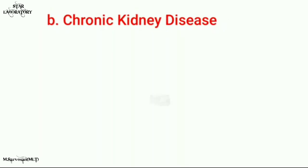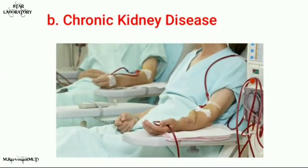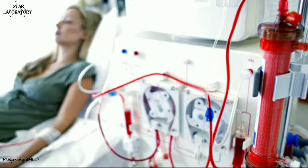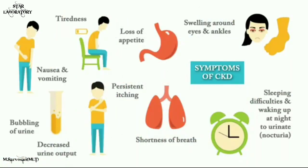The second type is chronic kidney disease or chronic kidney failure. This is a long-term disease condition where the kidneys get damaged day by day due to several reasons. The main reasons are high blood pressure and uncontrolled diabetic conditions. CKD patients commonly undergo dialysis. There are two types of dialysis: hemodialysis and peritoneal dialysis.